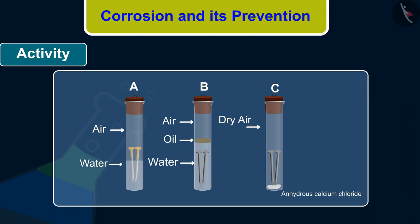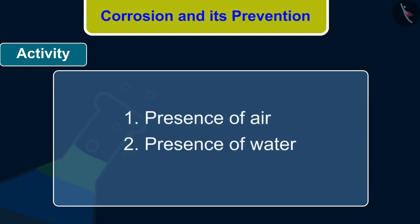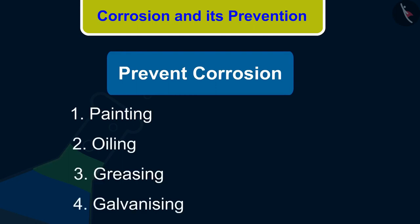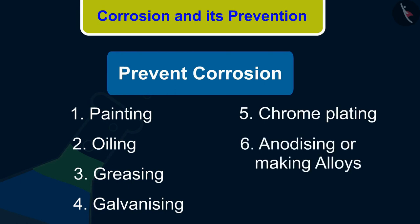What does this tell us about the conditions under which iron articles rust? The conditions are: presence of air, and presence of water. Let us now try to figure out what are the ways in which we can prevent corrosion. The rusting of iron can be prevented by painting, oiling, greasing, galvanizing, chrome plating, anodizing or making alloys.